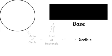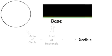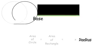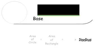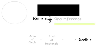To find the base, we need to look at the circumference of the circle. And when we compare the base and the circumference, we can see that the base is equal to one half the circumference.